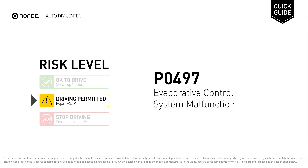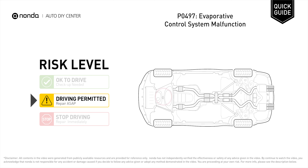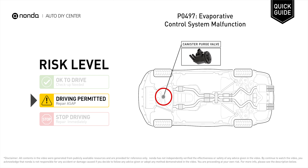P0497 is a diagnostic trouble code for evaporative control system malfunction. Under this circumstance, short distance driving is permitted, but your vehicle should be repaired as soon as possible. It means that the PCM has detected an issue with the evaporative control system.